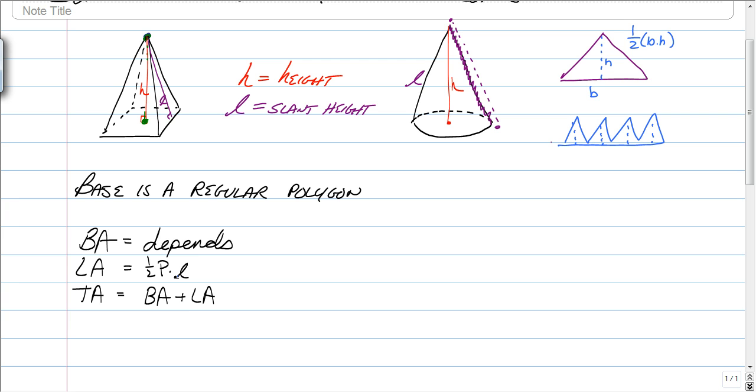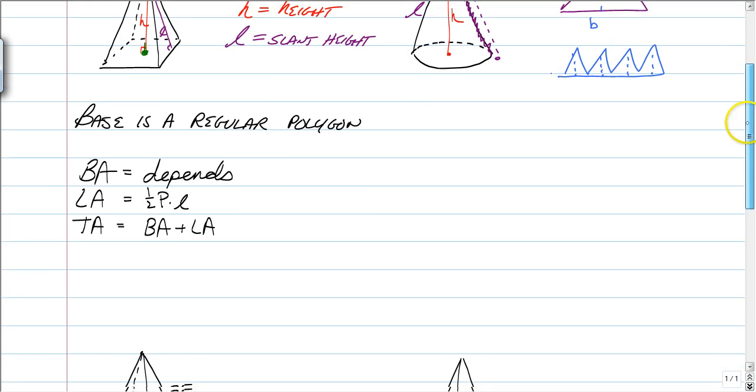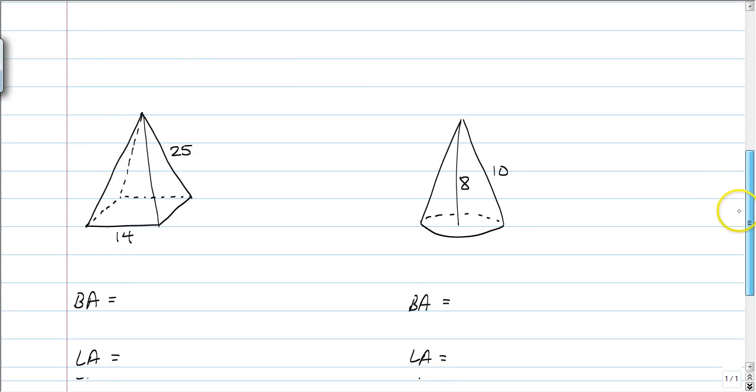Total area this time is just base plus lateral area. Because a pyramid and a cone only have one base, so you don't have to multiply it by two like we do in prisms and cylinders. So, let's go check it out.